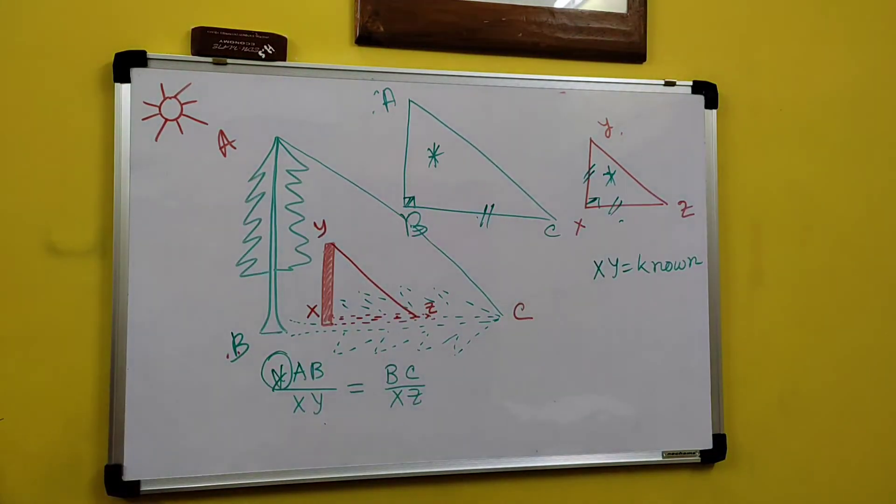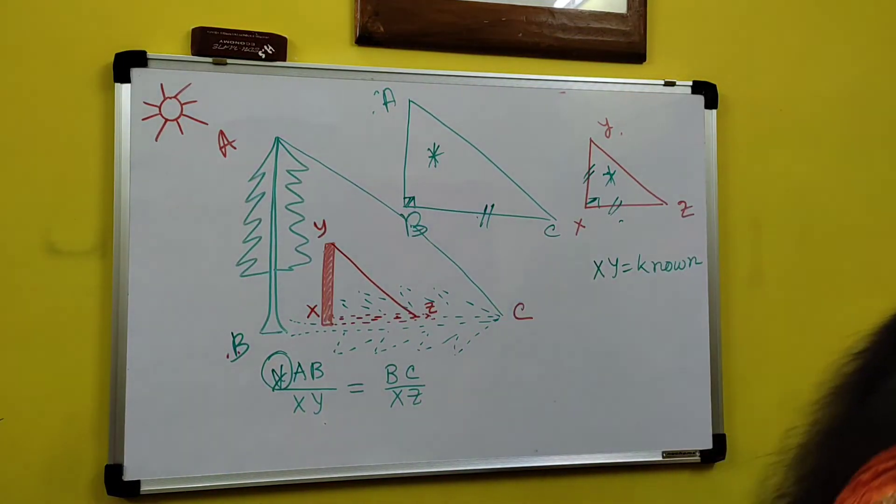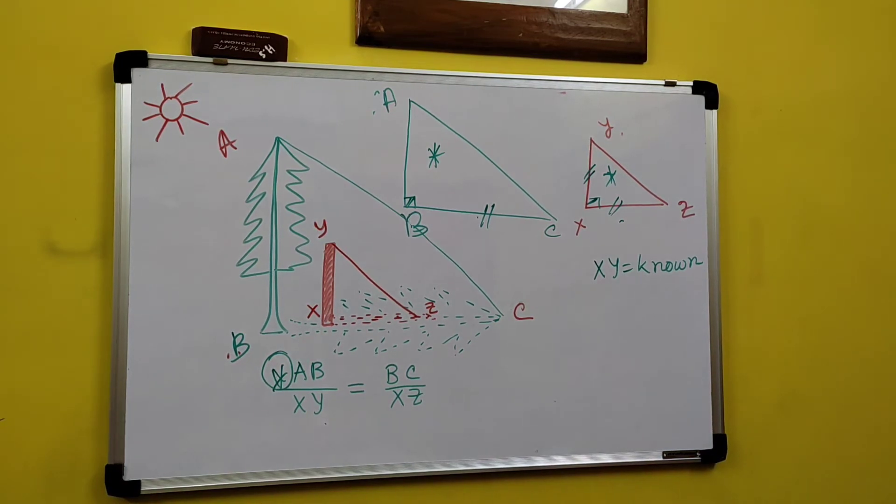That is another application. By ruler we can measure this by simple formula. Clear? Now going for that next application. That is all for today. Only another application is remaining. Next application is measurement of, that is determination of rate of flow of water.